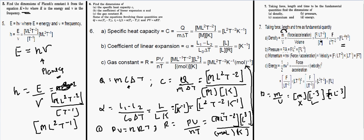Pressure in F, L, T system: force/area = F/L² = FL⁻². Momentum: mass × velocity = (F/LT⁻²) × LT⁻¹ = FT. Energy: half mv² — ignoring the constant, (F/LT⁻²) × (LT⁻¹)² simplifies to FL. So the dimensions of pressure, momentum, and energy in the F, L, T system are FL⁻², FT, and FL respectively.